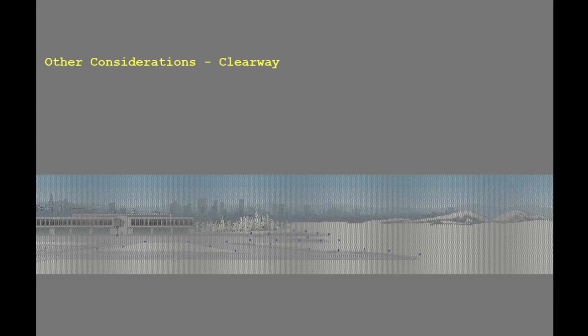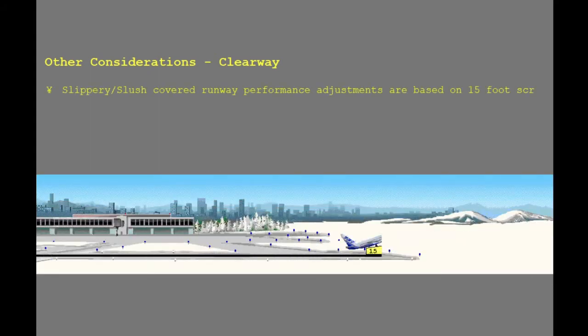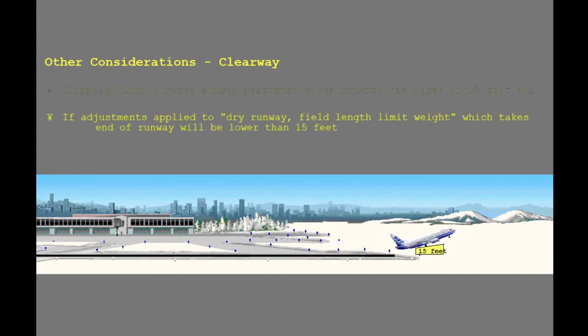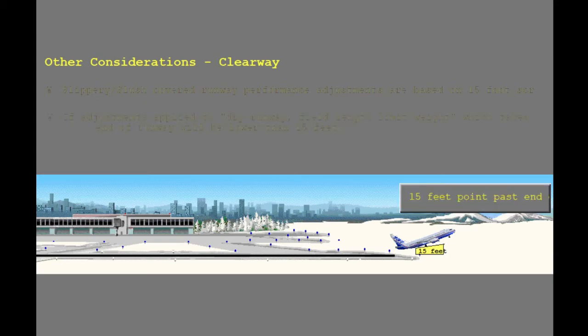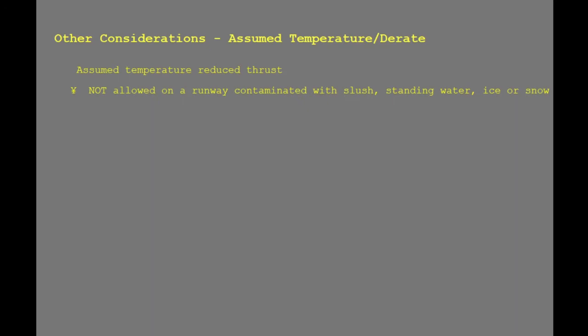There are some other considerations on the use of the performance adjustments provided in the Quick Reference Handbook and the Flight Planning and Performance Manual for a slippery or slush covered runway. The slippery or slush covered runway performance adjustments are based on a 15-foot screen height. If these adjustments are applied to a dry runway field length limited weight which takes credit for clearway, the height over the end of the runway following an engine failure at the critical point will be lower than 15 feet — as low as zero at the lift-off end of the runway. Assumed temperature reduced thrust is not allowed on a runway contaminated with slush, standing water, ice, or snow.